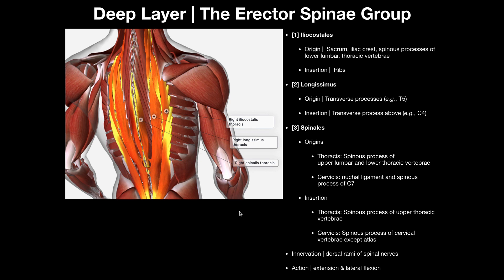When we're talking about the erector spinae group, generally speaking they all have the same innervation — by the dorsal rami of the spinal nerve at that level. These muscles exist all the way up the spine, so depending on where you are, it's going to be a different dorsal ramus: in the cervical region it would be a cervical dorsal ramus, in the lumbar region a lumbar dorsal ramus. They are segmentally innervated by different dorsal rami of the spinal nerves. The action for all of these is the same: this group is a spinal erector, meaning it allows you to stand upright — back extension when both sides contract, and lateral flexion when only one side contracts. Right erector spinae contracting gives lateral flexion to the right; left contracting gives left lateral flexion.